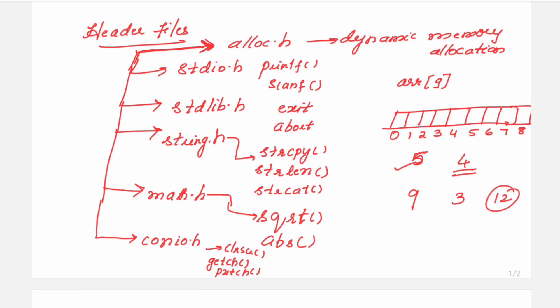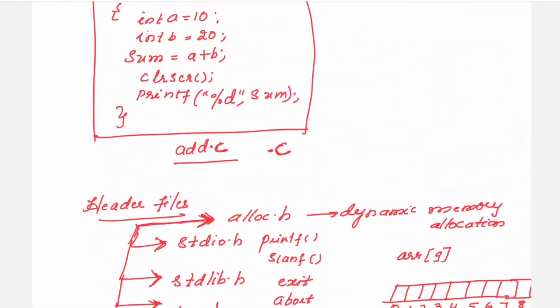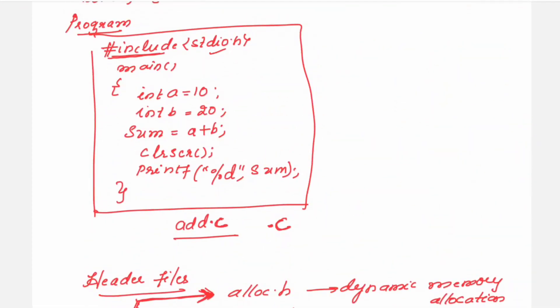So you can just see here the different header files. Alloc.h is one, then you have stdio.h, stdlib.h, string.h, math.h, and conio.h. So for these purposes you will be using here. Here in the example, I have included stdio.h. I have included clear screen here, but I have not included the corresponding library file. So it will give an error if I am not including conio.h here in this program.